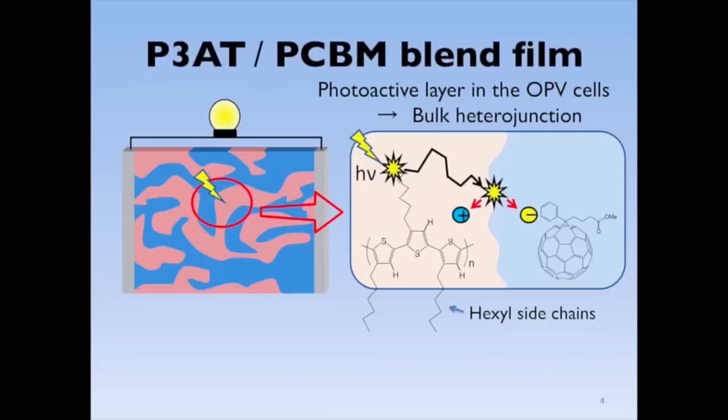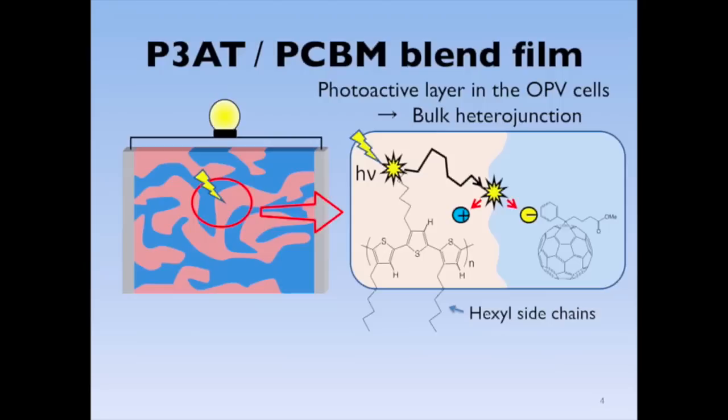Photocurrent is generated by carrier dissociation from electron-hole pairs. It is not clear why and how the photocarriers escape from the binding by the Coulomb attraction at the domain interface. To our knowledge, no experimental studies have been performed to determine the geometry, electronic coupling, and motions of the charge-separated states that are overcoming the Coulomb binding.